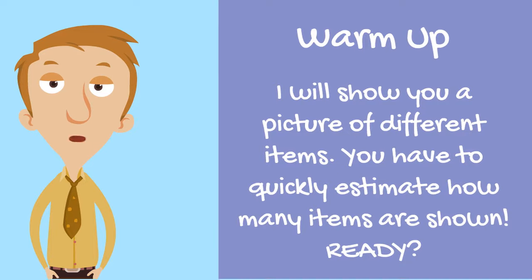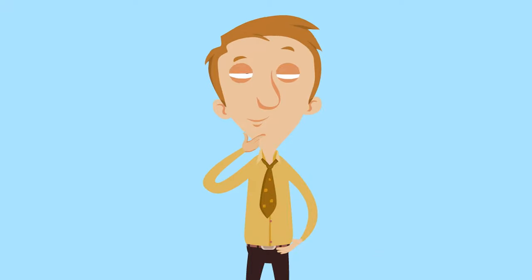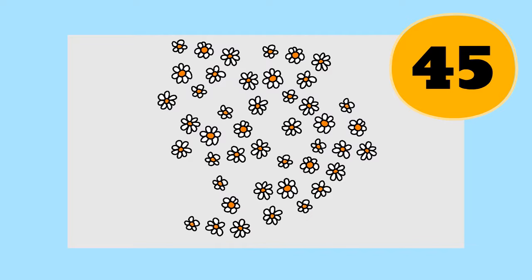Okay first picture. Here's a bunch of daisies. Pause the video and write down how many daisies you think there were. Well the answer was 45. Did you get close?